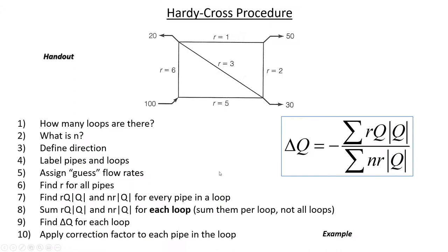Just as a reminder, the procedure is to examine how many loops there are and to determine what n value is being used. Both in this earlier example and the one I just handed you, there are two loops. We use n of 2 when using the Darcy-Wiesbach equation for friction loss. You'd use an n of 1.85 if you're using the Hazen-Williams equation. Clockwise is positive — that's how we determine whether a flow is positive or negative when we put it in the spreadsheet.